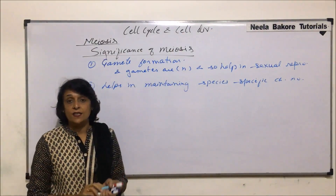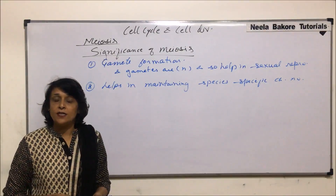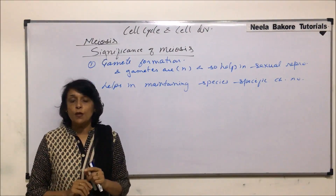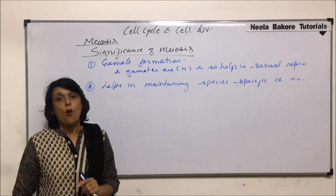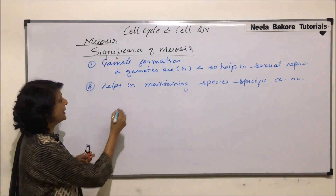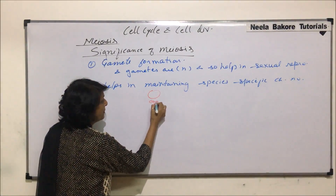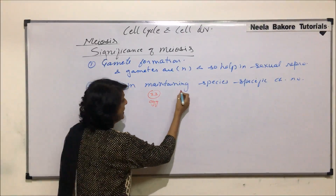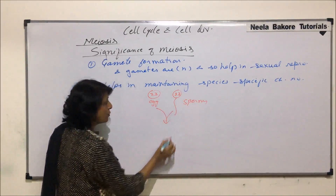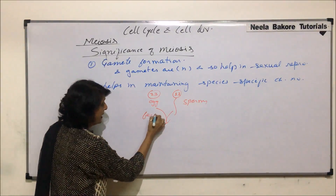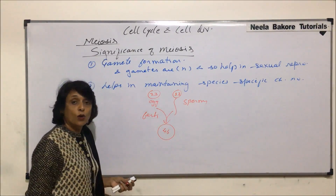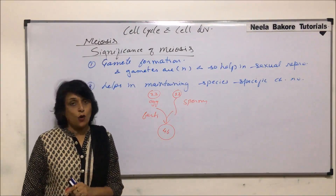What exactly do we mean by this? We mean that every species has a fixed number of chromosomes — we are not talking about the exceptions. Like human beings: the number of chromosomes is 46, or 23 pairs. How is this number maintained? The egg brings 23 chromosomes and the sperm also brings 23 chromosomes. When they fuse during fertilization, a zygote is formed with 23 plus 23, that is 46 chromosomes.